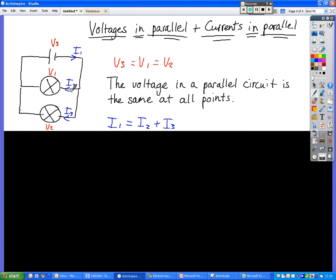There's more than one direction in which the current can flow, and that means that the way voltage and current behave in a parallel circuit is different from in a series circuit.